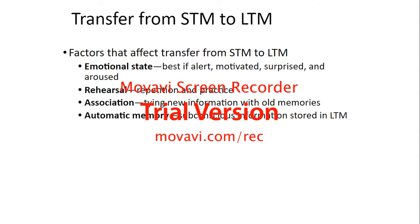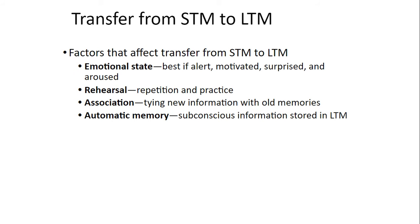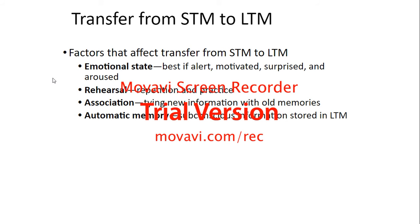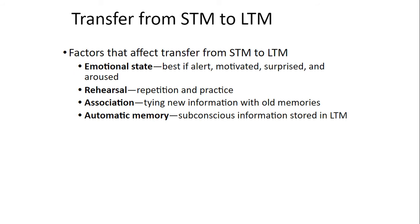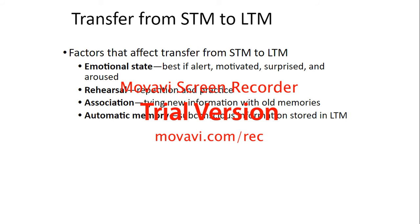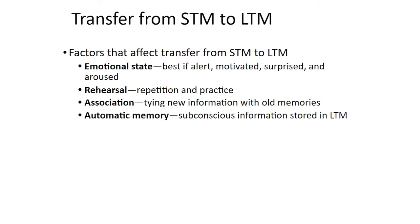Emotional state is one factor — we always remember things better when we're emotional, best if alert, motivated, surprised, and aroused. Rehearsal — rehearsing things, repetition and practice — is another factor. Different study methods like taking notes, hearing information, seeing information, and discussing it with other people are all ways of rehearsing information. Association — tying something new with old memories — also helps. That's why you use mnemonics, because you're tying new information with old memories.